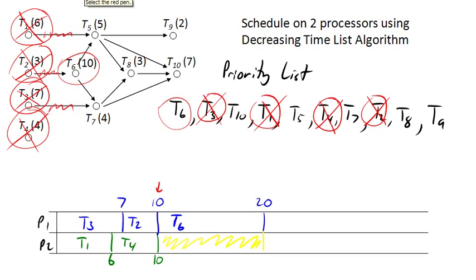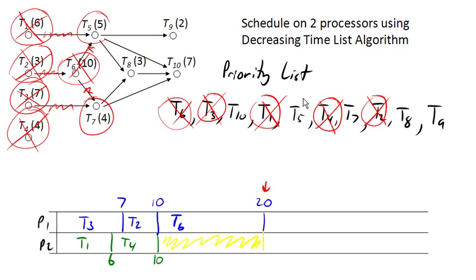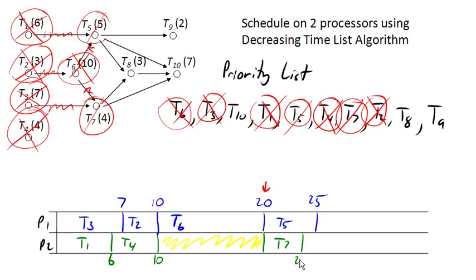We fast forward in time to time 20. At time 20, task six gets completed. With that, the requirements are done, so task one and task five and task seven all become ready. We can go ahead and assign those to processor one and two. Processor one is going to get task five, bringing us out to 25 units of time. Processor two is going to get task seven, which takes only four units of time. We fast forward our now out to time 24, when task seven completes.